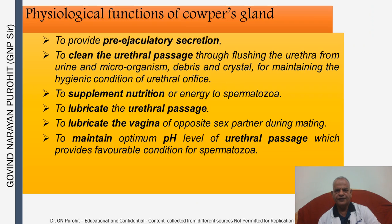The physiological function of the Cowper's Gland is to provide pre-ejaculatory secretion, to clean the urethral passage by flushing the urethra from urine, microorganisms, debris, and crystals — maintaining the hygienic condition of the urethral orifice before semen ejaculation. They also supplement nutrition or energy to spermatozoa, lubricate the urethral passage, lubricate the vagina of the opposite sex partner during mating, and maintain the optimum pH level of the urethral passage, which provides favorable conditions for spermatozoa.